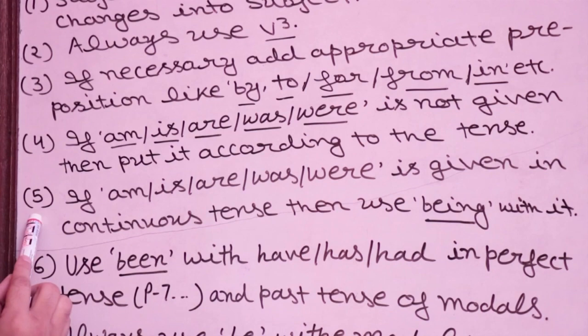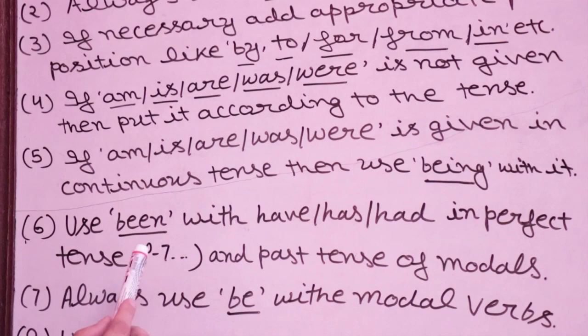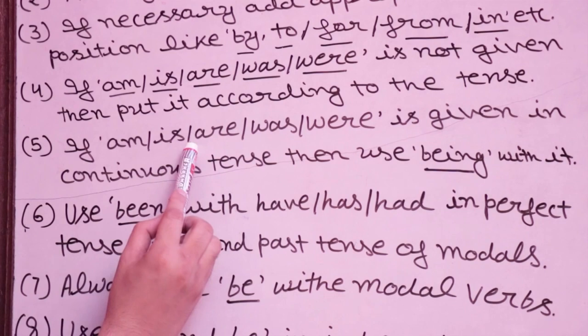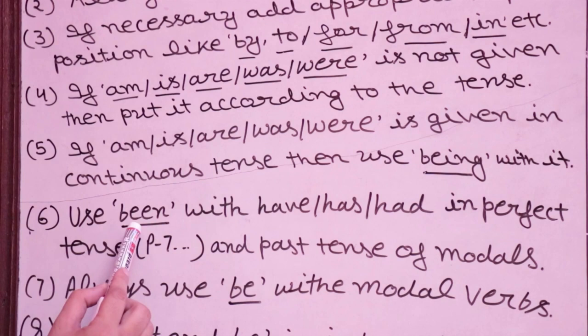Fifth rule: If am/is/are/was/were is given in a continuous tense — present continuous, past continuous, or future continuous — then use 'being' with it. So we add B-E-I-N-G.